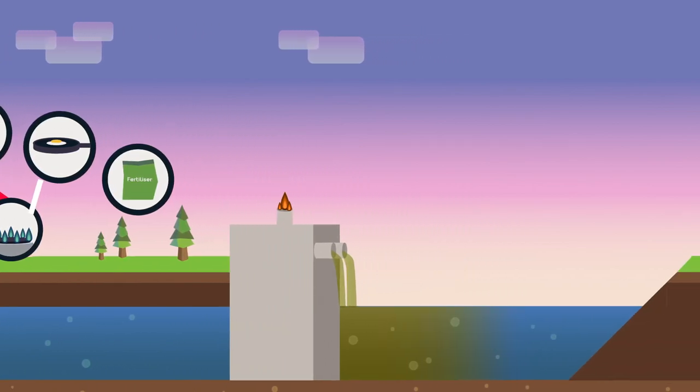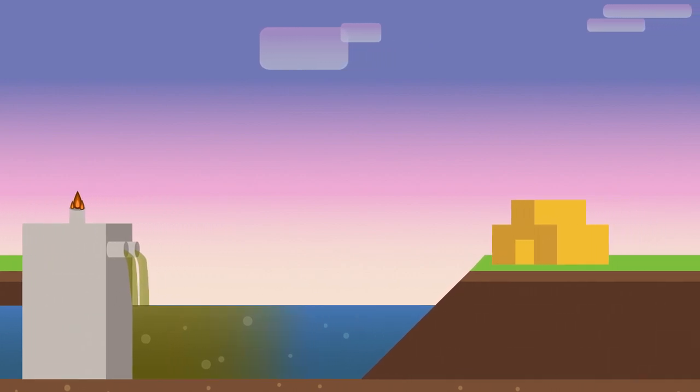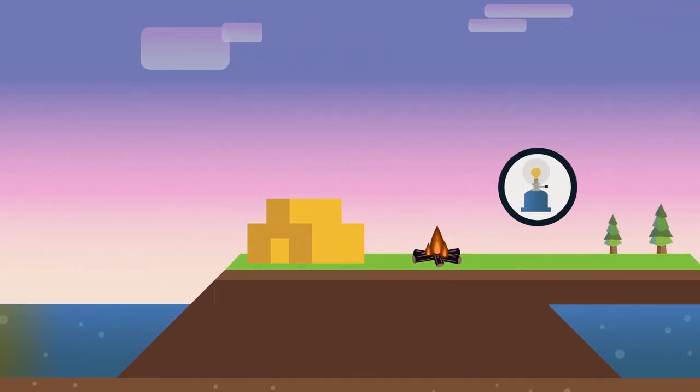Biogas digesters are used in most sewage works, where the methane is burnt to generate electricity. Another example of biofuel is agricultural waste, for example wheat straw, which is burnt to generate electricity.